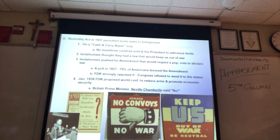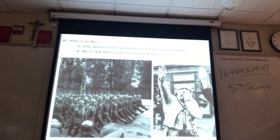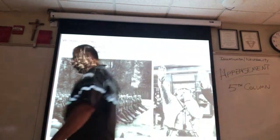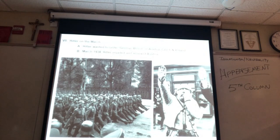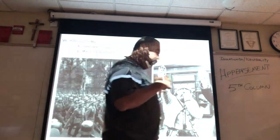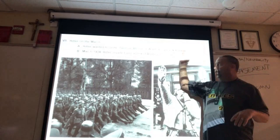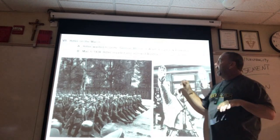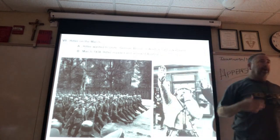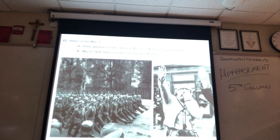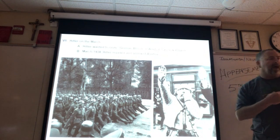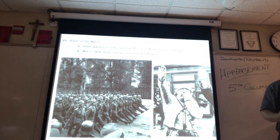Hitler on the march. Where is Hitler from? Austria. The three countries we're going to talk about today are Austria, Czechoslovakia, and Poland. There are people of German ancestry living in these countries, and Hitler is going to use uniting German blood — bringing these Germans back into the fold — as an excuse and justification for invading these countries.